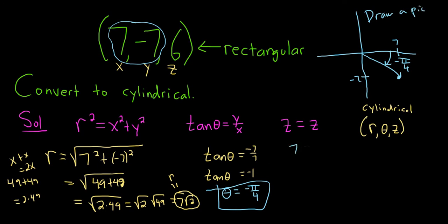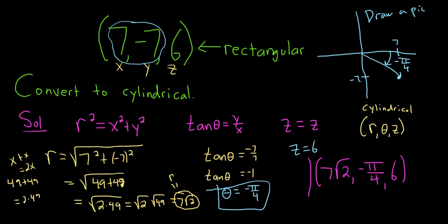And the last one is z equals z, which is just 6. So the final answer in the form (r, theta, z) is: 7 square root of 2, negative pi over 4, and 6. That's the point in cylindrical coordinates. I hope this video has been helpful. Thank you.